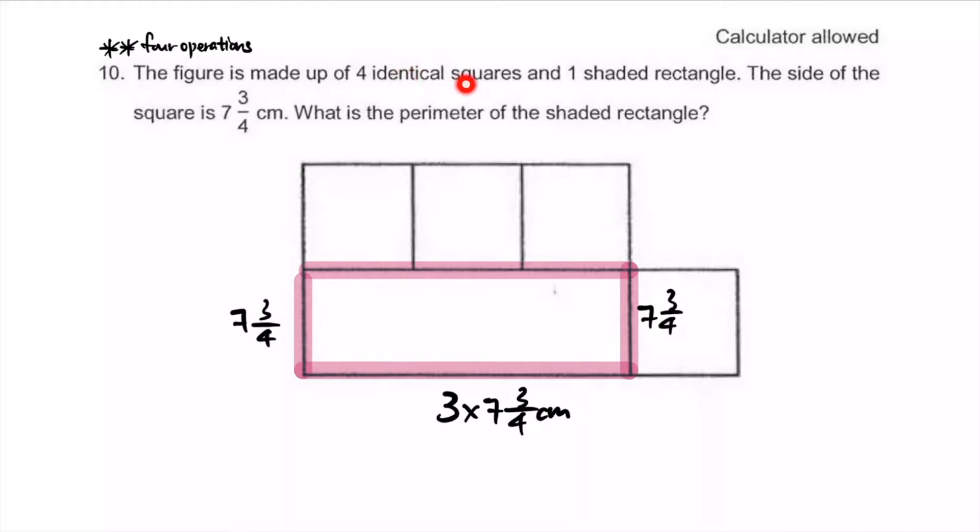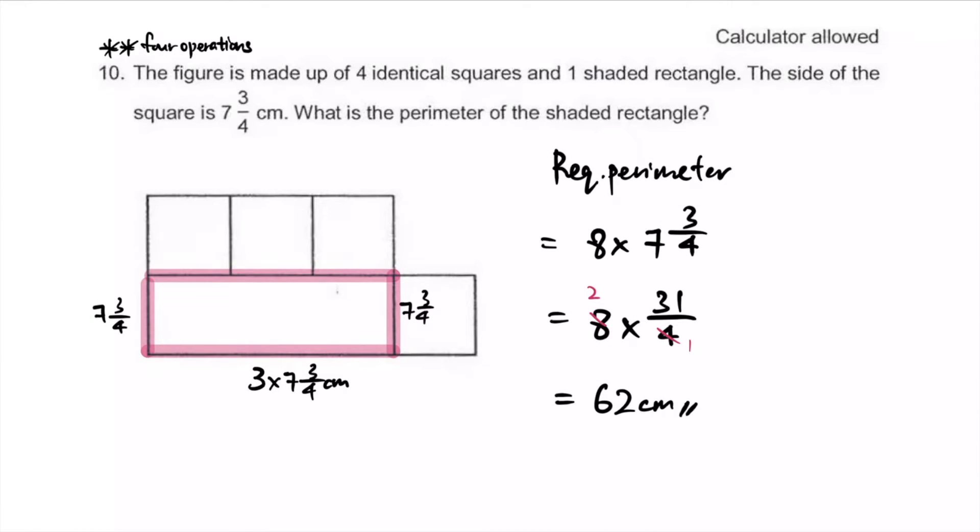The figure is made of 4 identical squares and 1 shaded triangle - well, rectangle I mean. It's not shaded, but here we go. The side of the square is 7 3/4. Imagine every side here is 7 3/4. Because this side here is 7 3/4, we can say this side is 7 3/4. The length of this rectangle is 3 times 7 wholes and 3/4. What is the perimeter of the shaded rectangle? We're going for 1, 2, 3, 4, 5, 6, 7, 8 sides.